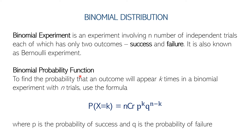In a binomial probability function, we must be able to apply this formula. The probability that X is equal to K, where K is the number of times the experiment with n trials is considered successful. That is a combination of n taken K, and P raised to K tells you the number of times it is successful. P is the probability of success. Multiply that by Q, where Q equals 1 minus P, and that is failure, raised to the exponent n minus K — the exponent for failure.